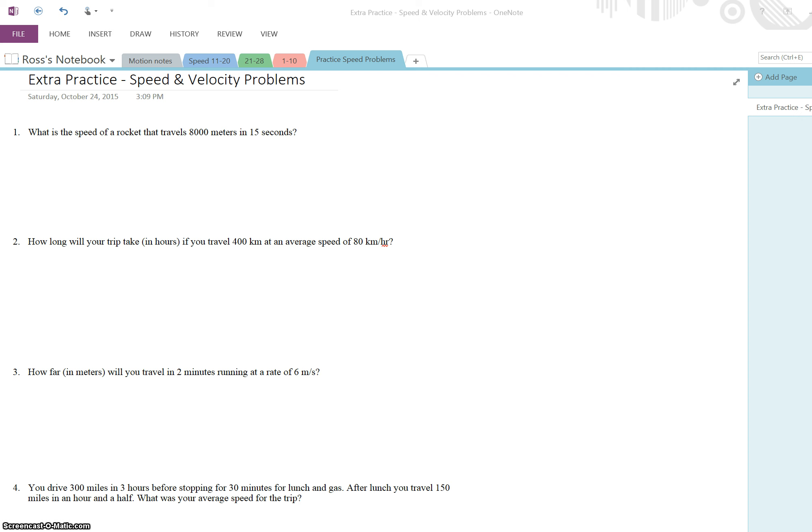So the first question, what is the speed of a rocket that travels 8,000 meters in 15 seconds? Remember that the very first thing that we do with any of these problems is we write down D, T, S. Those are the three variables that we could possibly be solving for. At the top of my problem set I always remind myself what the equation is. Speed is distance divided by time. I will come through and circle all of the pieces of information that I need to know. So 8,000 meters, that's my distance. 15 seconds, that's my time. So the only one that I have left to solve for is speed.